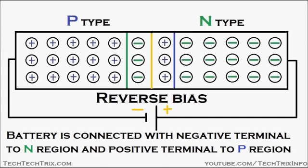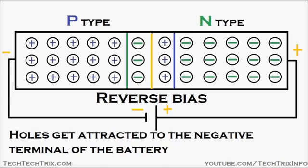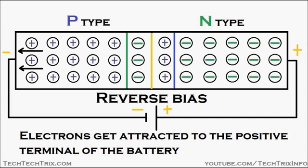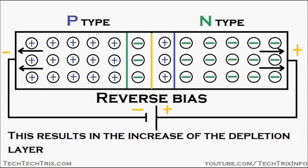The positive terminal of the battery is connected towards the N-type semiconductor. So holes get attracted to the negative terminal of the battery, and the electrons get attracted towards the positive terminal of the battery, as shown in the animation.